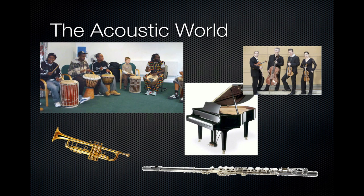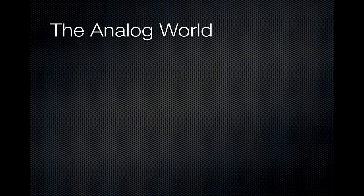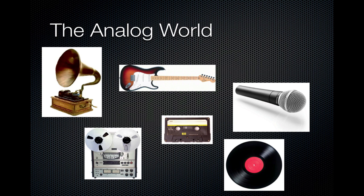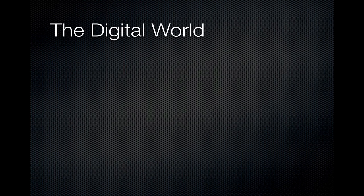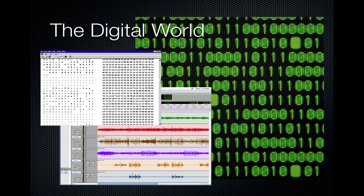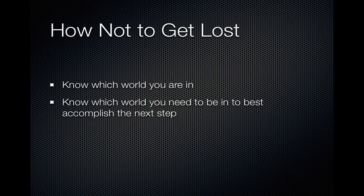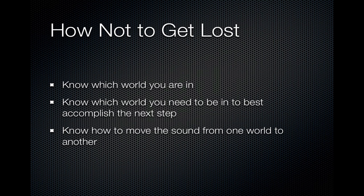The first world is the acoustic world — this is the world that our ears live in, where sound is made through vibrations in the air. For centuries, that was the only world that sound existed in. Then in the late 1800s, we began to see the analog world of sound, where sound waves are represented in some sort of physical medium, or in more advanced cases, a magnetic medium such as cassette tapes or reel-to-reel tapes. In the digital world, the third of the three worlds, sound is represented as numbers. It's important to know those three worlds so you don't get lost — you want to know which world you're in at any given point in an audio setup, which world you want to be in to accomplish the next thing, and how to move sound from one world to another.